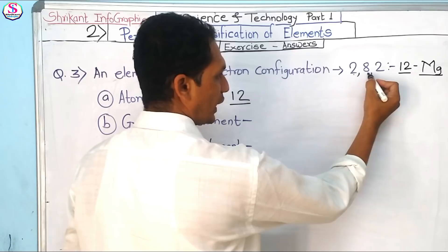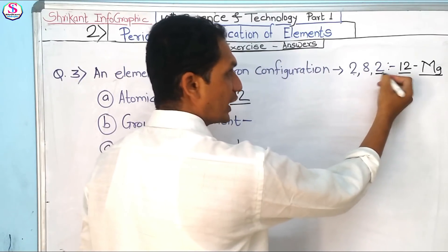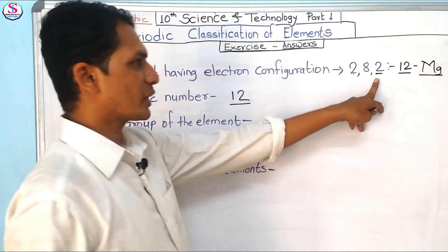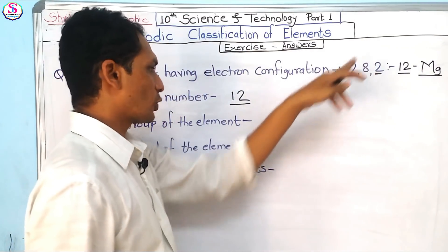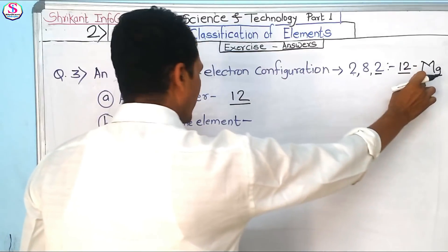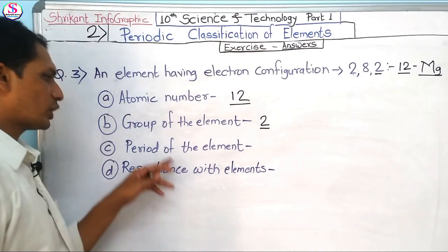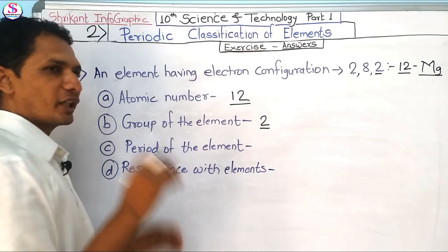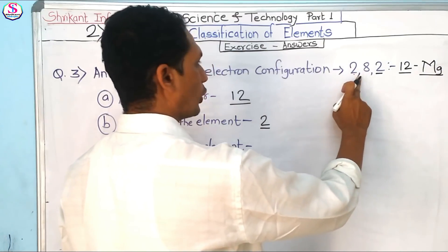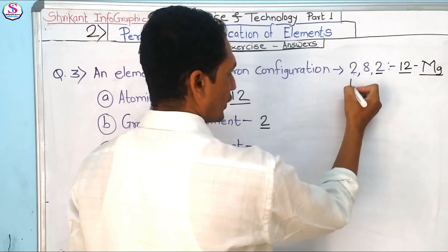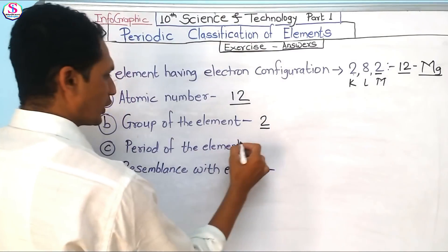For the group of the element: the configuration 2, 8, 2 shows 2 electrons in the last orbit — these are valence electrons — so the valency is 2, meaning magnesium is present in Group 2. The period is determined by the number of shells.